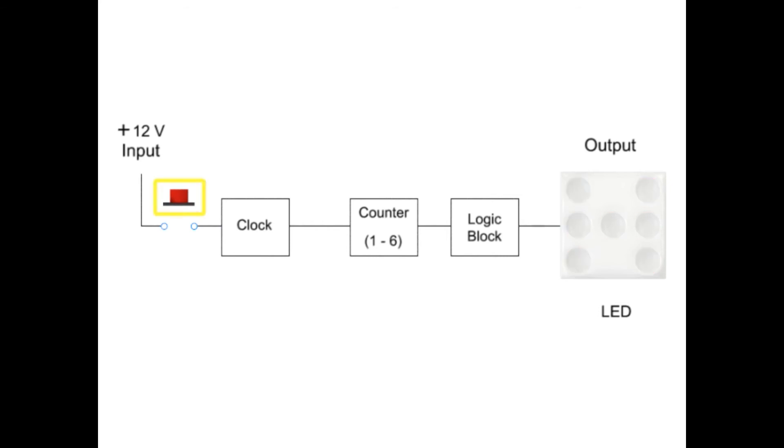Pressing or closing the push button switch causes the clock to generate a square wave signal. This signal activates the down counter to cycle through a repeating count of 6 through 1. When the push button is opened, the counter randomly stops on a number.